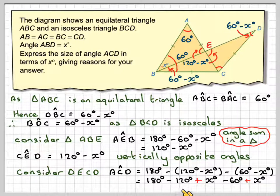So 180 minus 120 minus 60 gives you nothing, so we've just got X plus X, which is 2X.